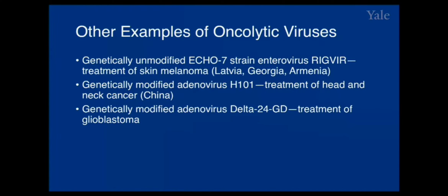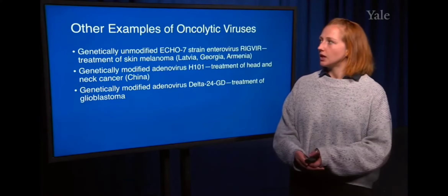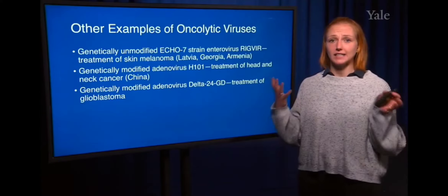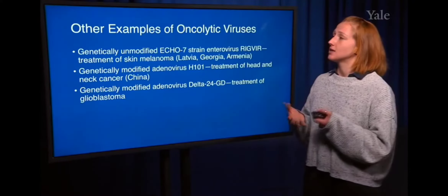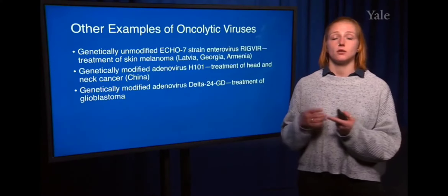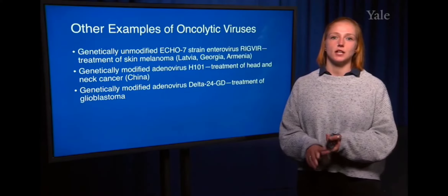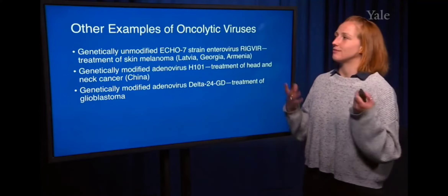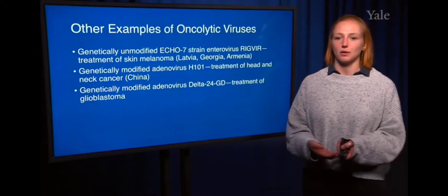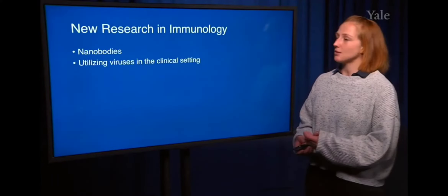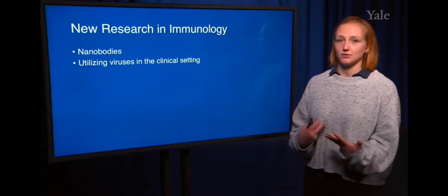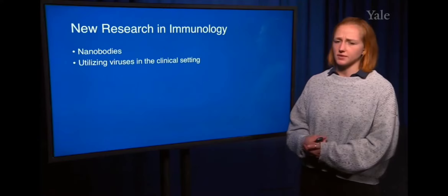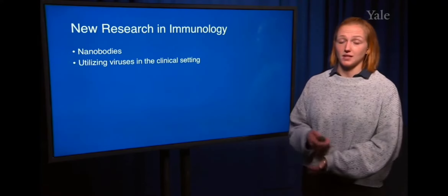This is a really big field, and in order to generate highly effective oncolytic viruses, a researcher really needs to know a high level of virology as well as immunology and oncology. This could be a very exciting field going forward. Now that we've covered those two topics in great detail, let's look at a couple more examples of different topics that are going to be really exciting in immunology.